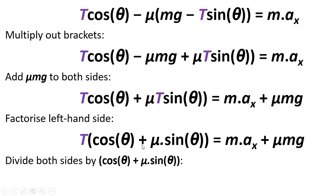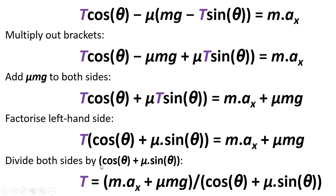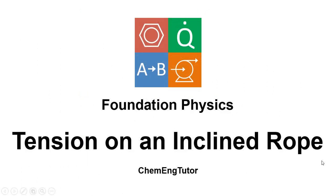Next we divide both sides by cos theta plus mu sin theta. And we end up with the equation for T. So we've solved the problem. So that's been a video about tension on an inclined rope involving friction.